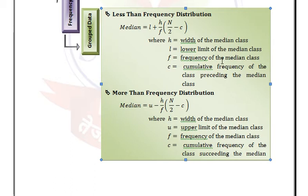C is the cumulative frequency of the class preceding the median class. For more than frequency distribution, the median is: U − (H/F) × (N/2 − C), where U is the upper limit of the median class.